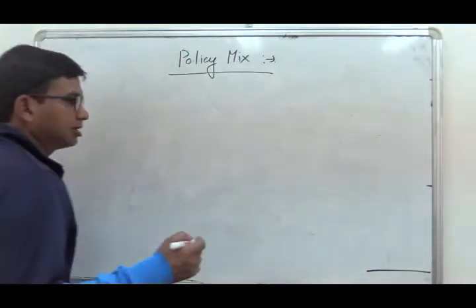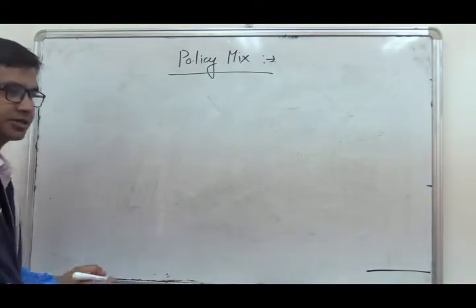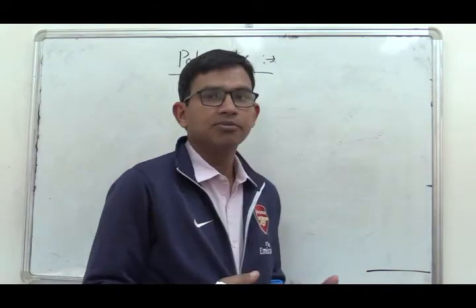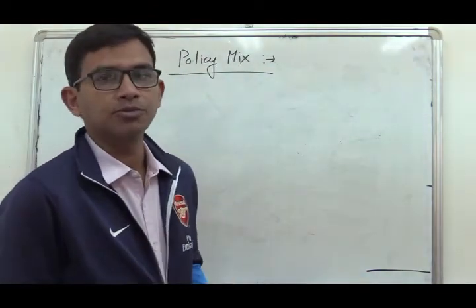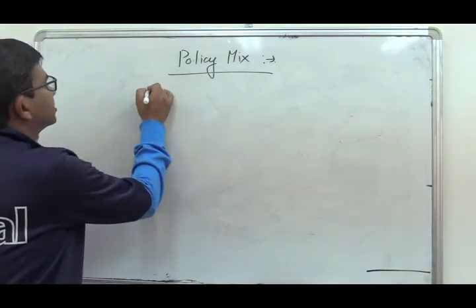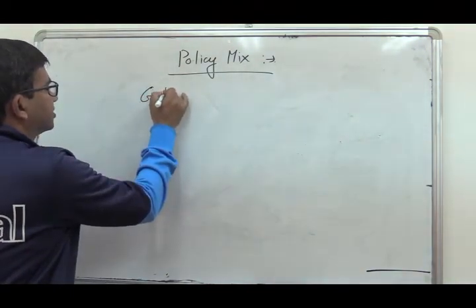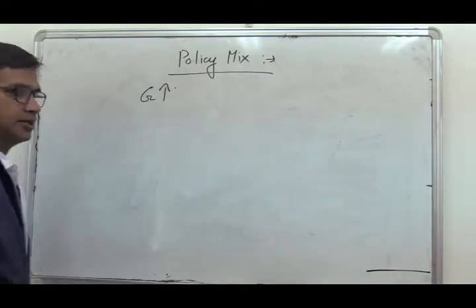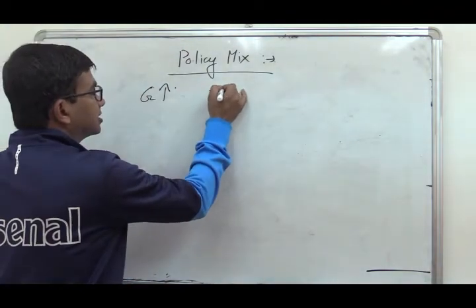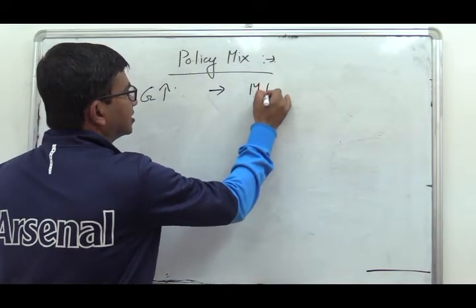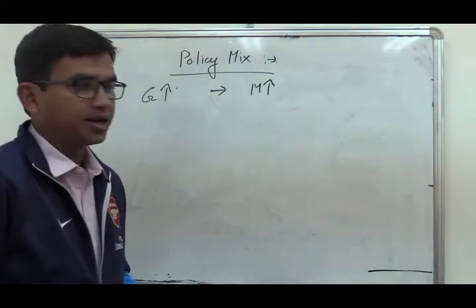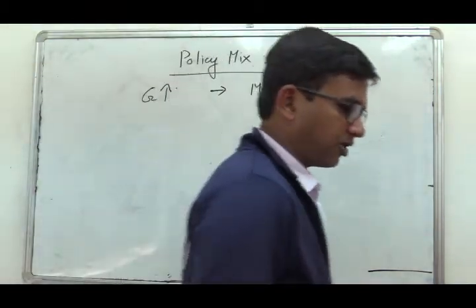Here we will consider policy mix. Policy mix means the combination of both fiscal and monetary policy. Let us take an example in which on one hand the government is increasing public expenditure, and that public expenditure is financed by increasing the money supply — maybe by printing new money, which we call deficit financing.